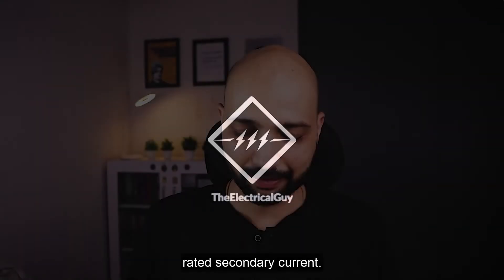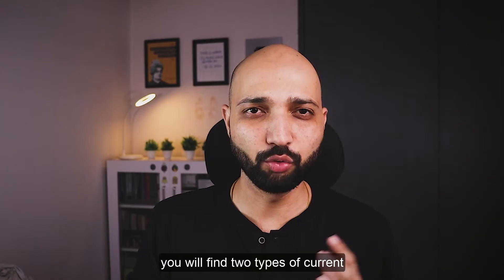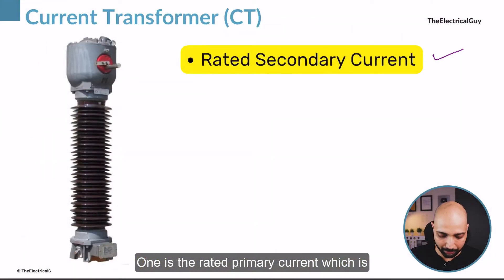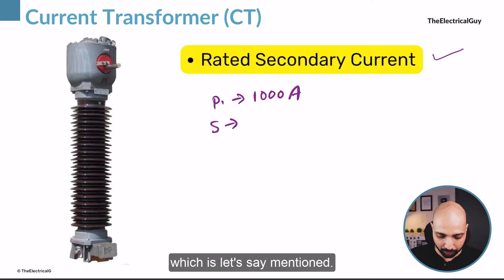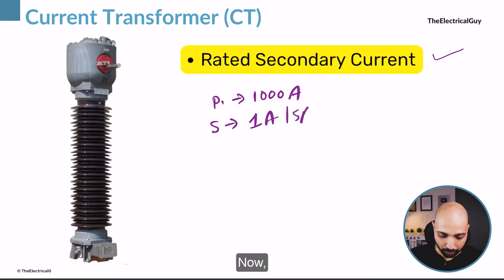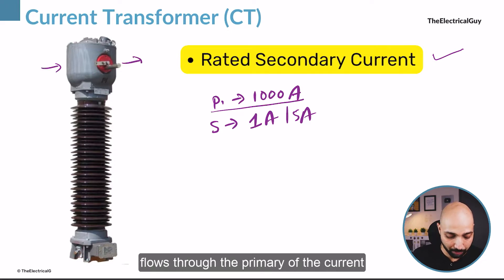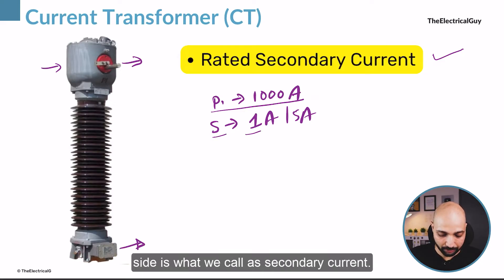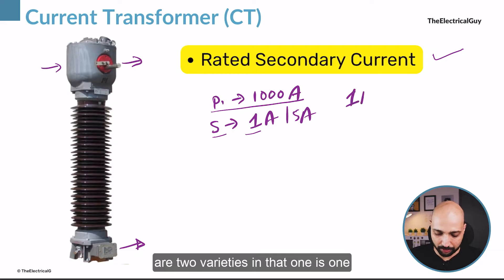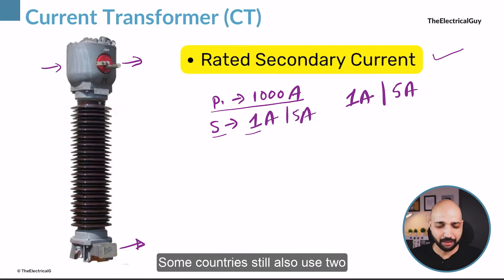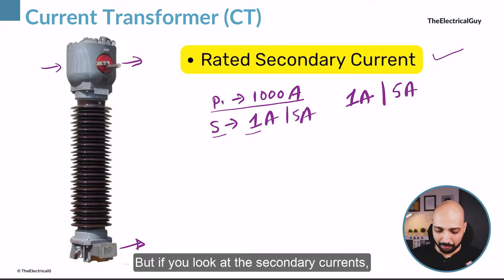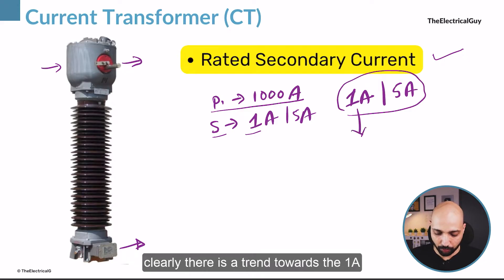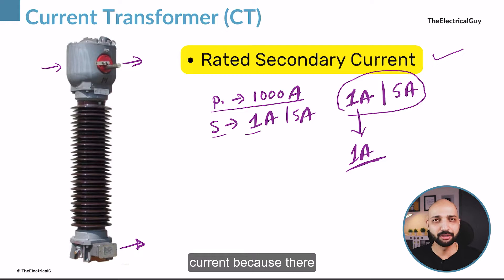Let us start with the rated secondary current. If you look at a current transformer, you will find two types of current mentioned on the nameplate: one is the rated primary current, let's say 1000 ampere, and also a secondary current, mentioned as 1 ampere or 5 ampere. The primary current flows through the primary of the CT, and the output from the secondary side is the secondary current. The secondary current generally comes in two varieties: 1 ampere and 5 ampere.